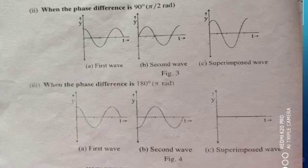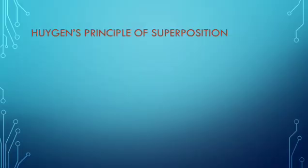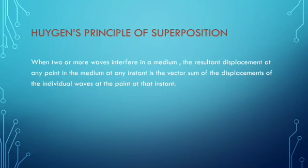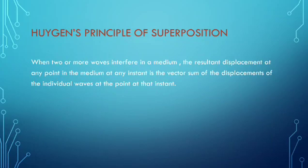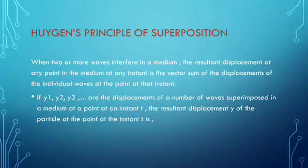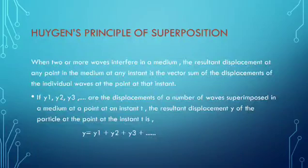The waves follow the superposition principle — Huygens' principle of superposition. When two or more waves interfere in a medium, the resultant displacement at any point in the medium at any instant is the vector sum of the displacements of the individual waves at that point at that instant. If y1, y2, y3, etc. are the displacements of the superimposed waves at a point at instant t, then the resultant displacement y is given by: y = y1 + y2 + y3 + ...